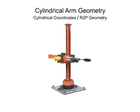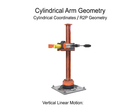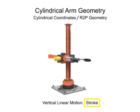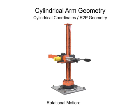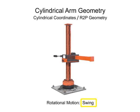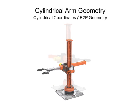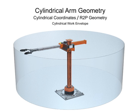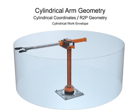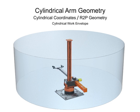Robotic arms with cylindrical geometry move linearly in two directions. Vertical linear motion is called stroke, horizontal linear motion is called reach, and rotational motion is called swing. Cylindrical geometry robots have a cylindrical work envelope. The advantage of this work envelope is a robotic arm reach that is deep at both the top and bottom of the stroke.